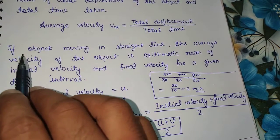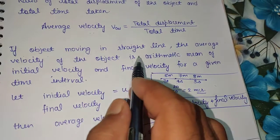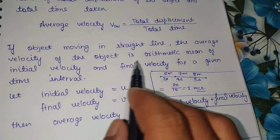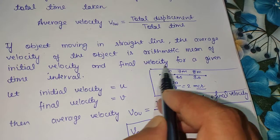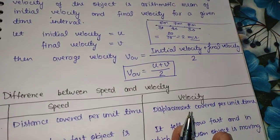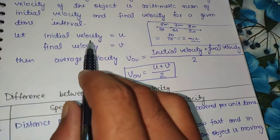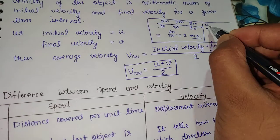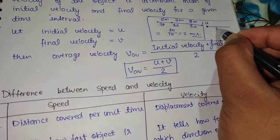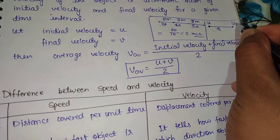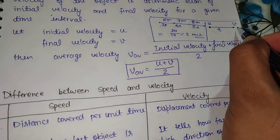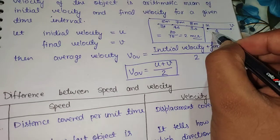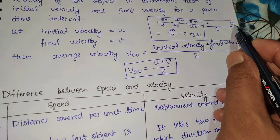In another form, if the object is moving in a straight line, the average velocity is the arithmetic mean of the initial velocity and the final velocity for a given time interval. For example, if an object was initially moving with velocity U, and after time T its velocity becomes V, then the initial velocity is U and the final velocity is V after time T.